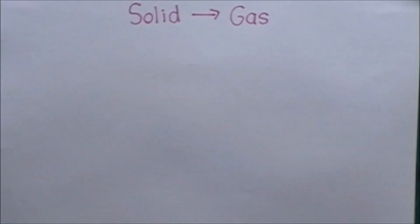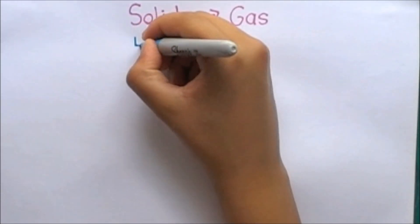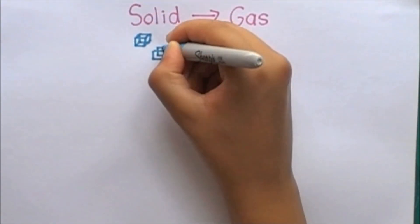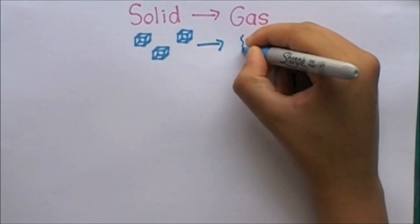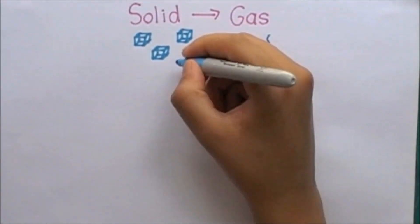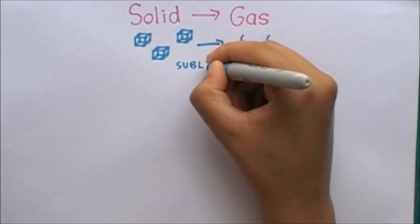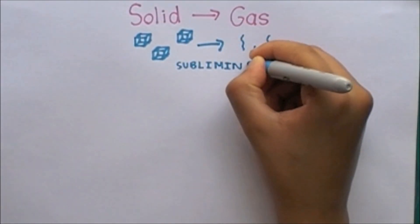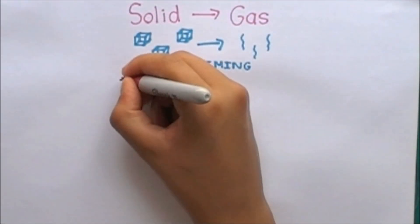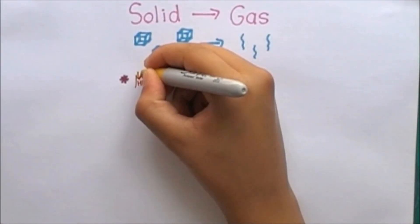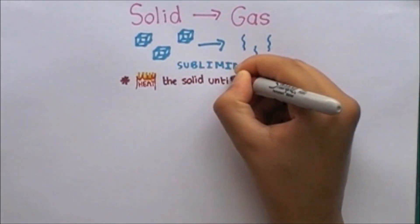The change in state from a solid to a gas is called subliming. This change is brought about by heating the solid until it sublimes into a gas.